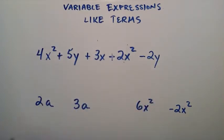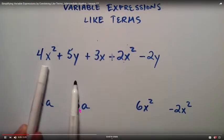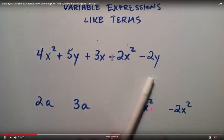What are like terms? Well, these are like terms and these are like terms. So what makes them like terms? If we cover up the coefficient 2 and the coefficient 3, then the remaining part of our term is the same. They're both a. And if we cover up the coefficient 6 and the coefficient negative 2, then the remaining part of these terms are both x squared. So when you cover up the coefficient, if the remaining part is the same, then you have like terms.